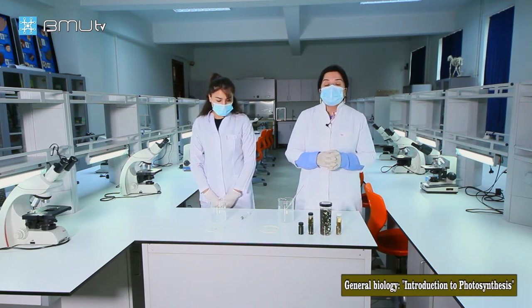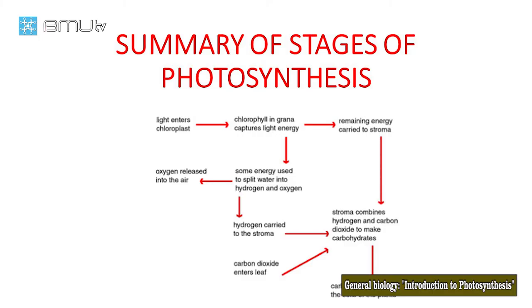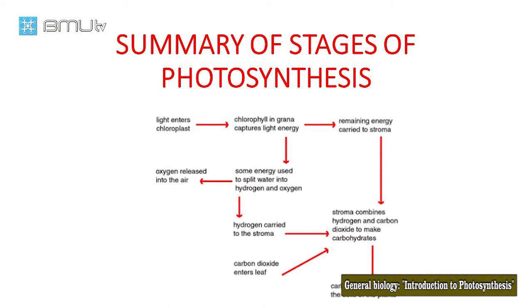Let's turn to the second stage of photosynthesis. The second stage is light-independent. By other words, we can call this stage the Calvin cycle.